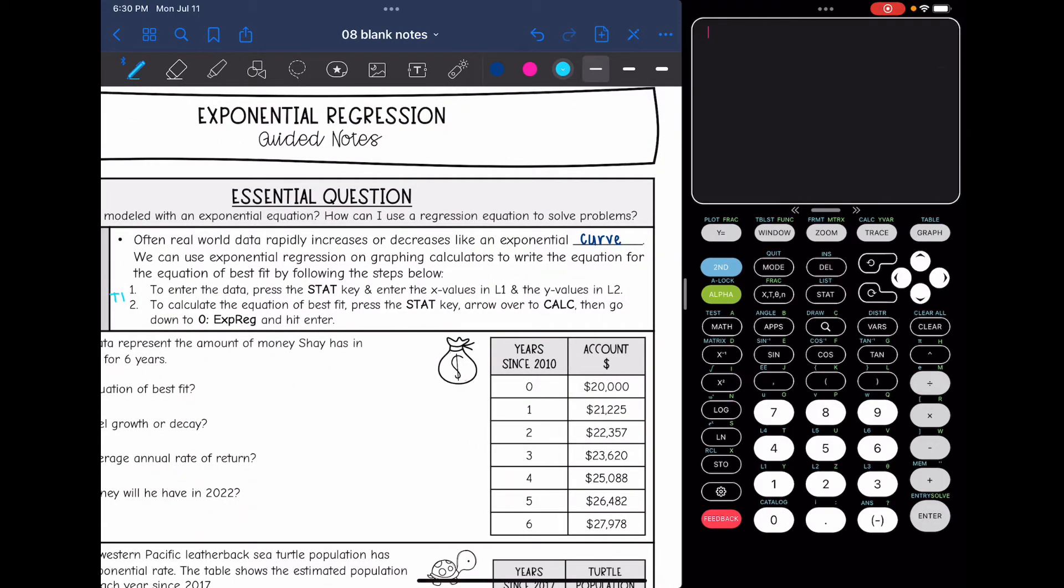So just like with linear and quadratic regression, you will click stat, enter, and then you will put the X values in L1 and the Y values in L2. And then to calculate the equation of best fit, we will do stat, we'll arrow over to calc. We've done four linear regression and five quadratic regression. This time we're going to go down to zero for exponential regression.